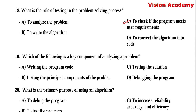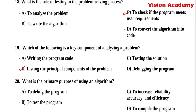Question number 19: Which of the following is a key component of analyzing a problem? Option A, writing the program code. Option B, listing the principal components of the problem. Option C, testing the solution. Option D, debugging the problem. Here, option B, listing the principal components of the problem, is the right answer.